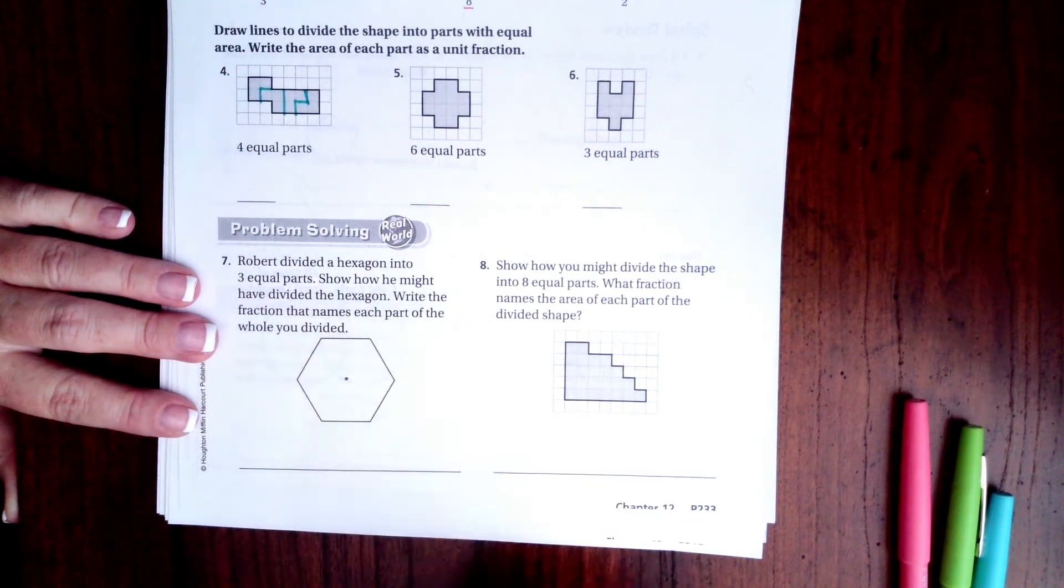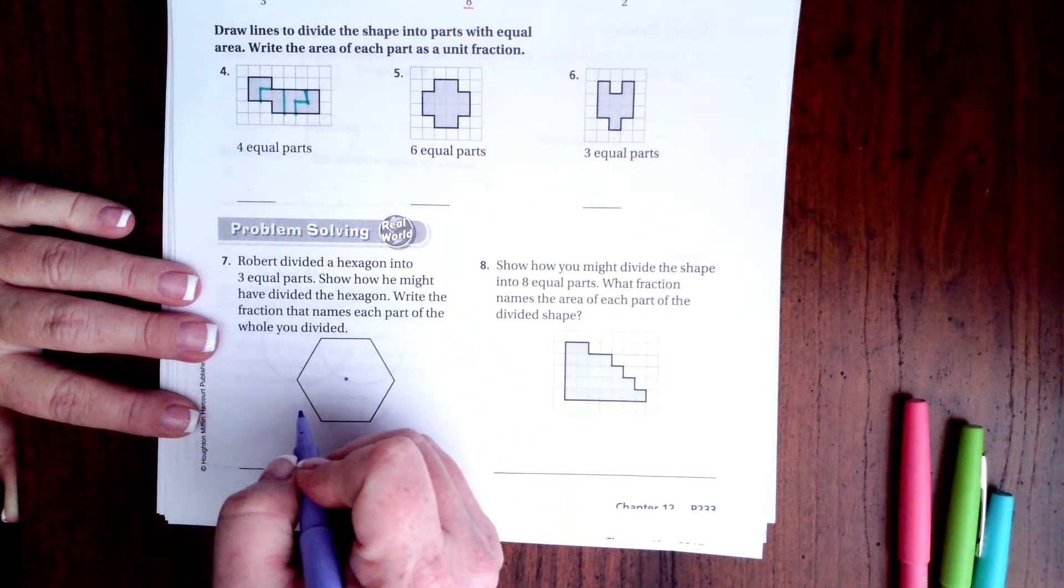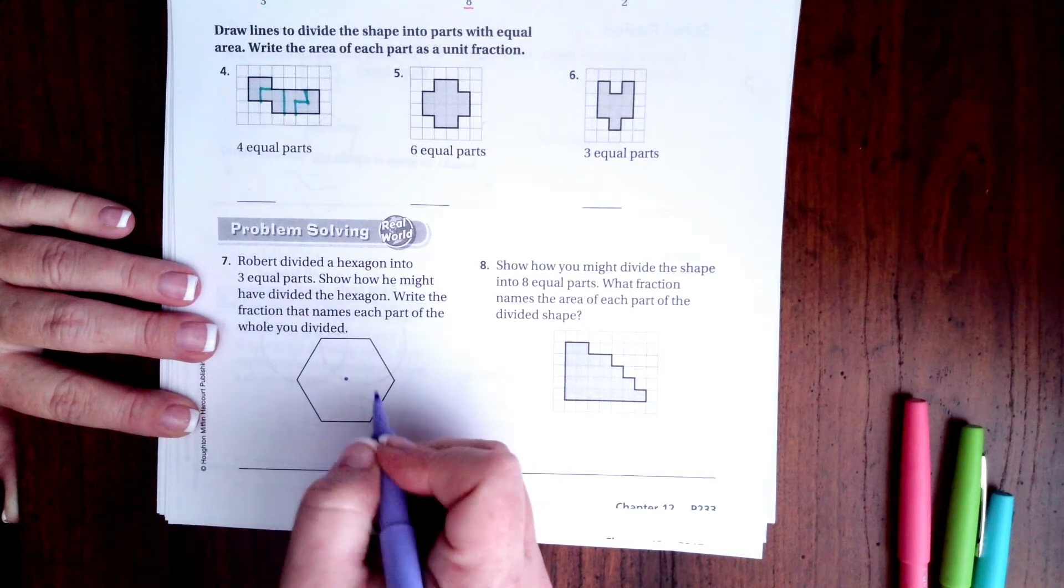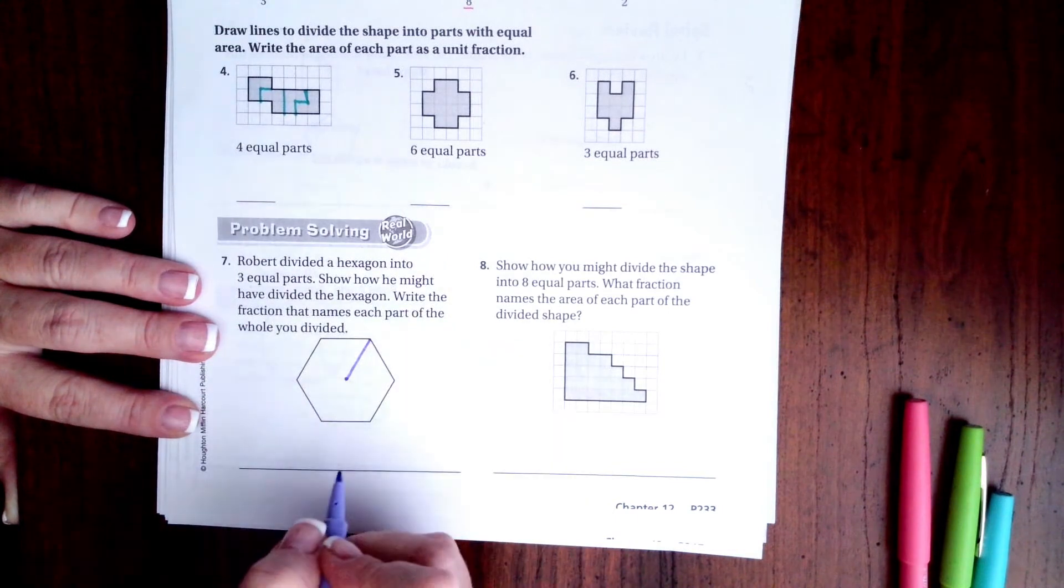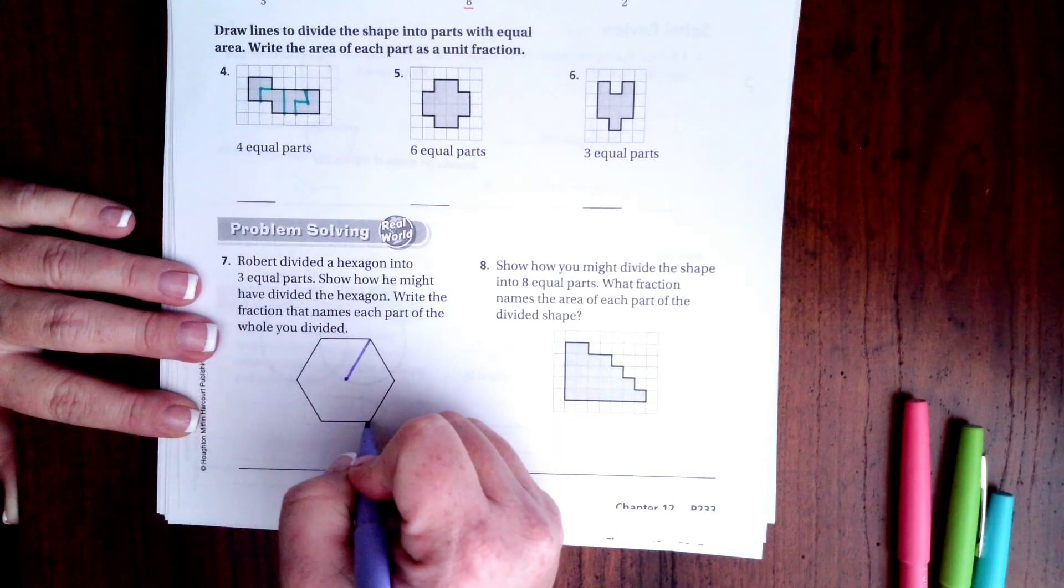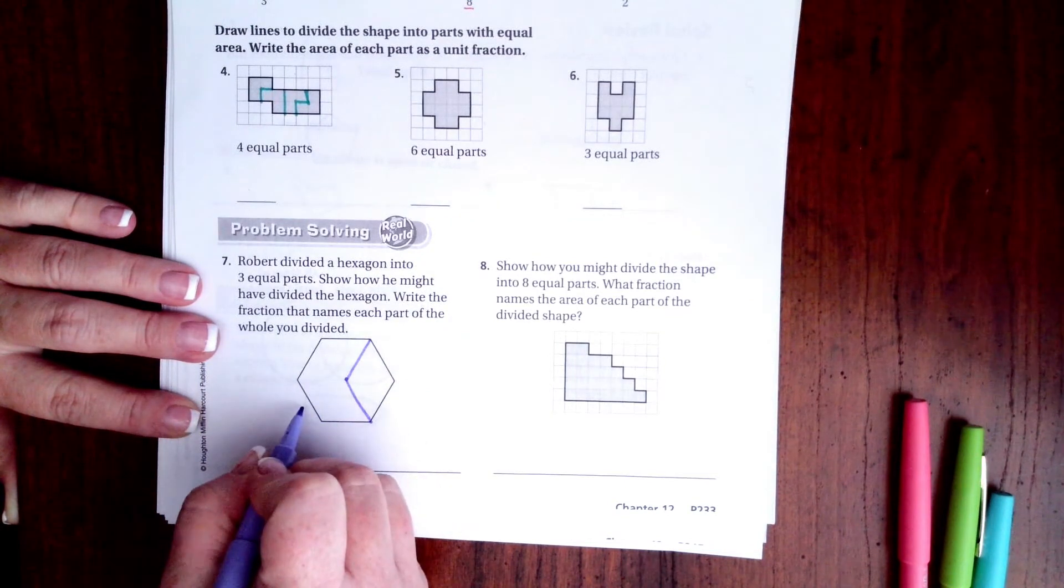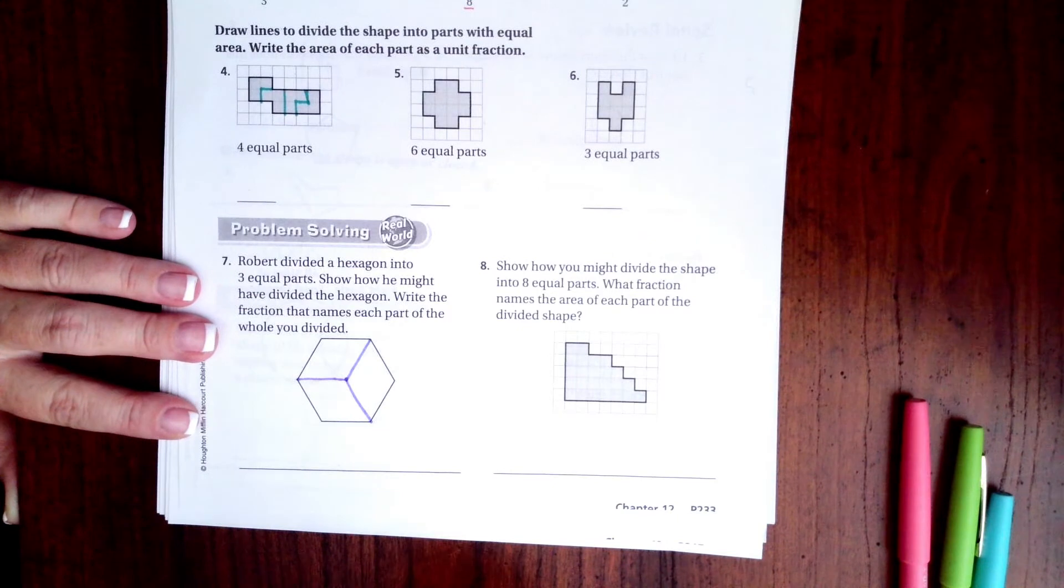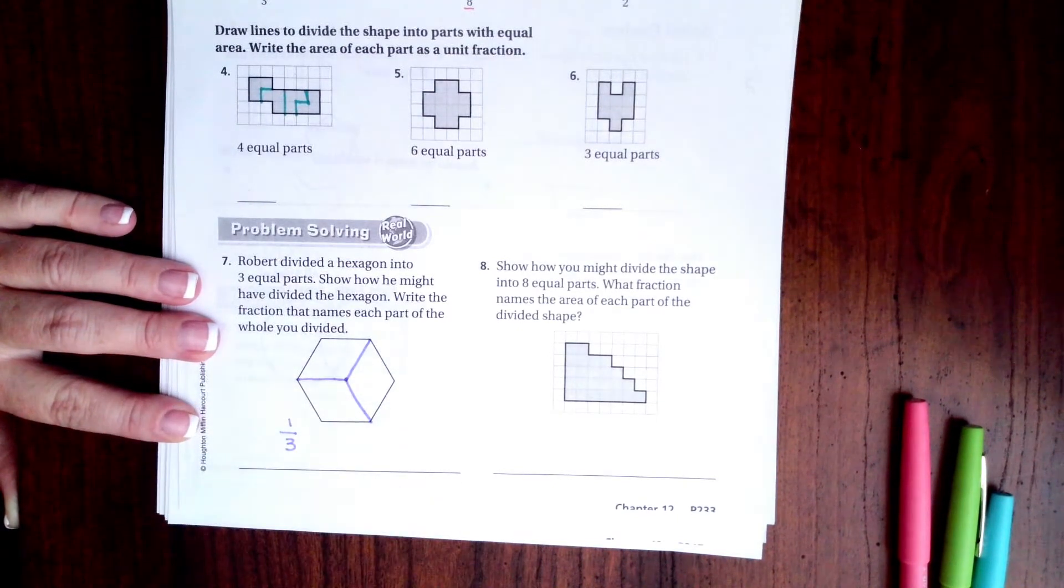So I'm going to put a little dot in the middle, okay, and I know that a hexagon has six sides. So that just means that I need two of the sides for each one. So I'm going to go from this corner to my dot. That's one side, that's two sides, which means it goes here. Now one, two sides. Now I have three equal parts and they're in thirds.